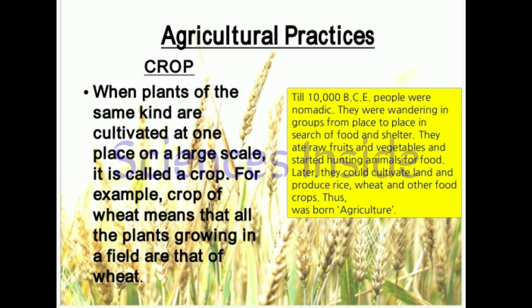First of all we must know what is a crop. When plants of the same kind are cultivated at one place on a large scale, it is called a crop. For example, a crop of wheat means all the plants growing in a field are wheat. The products obtained from crops are referred to as crop produce.